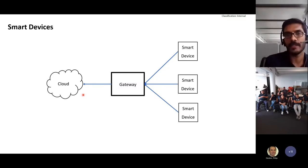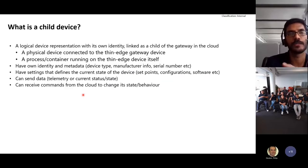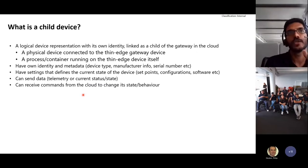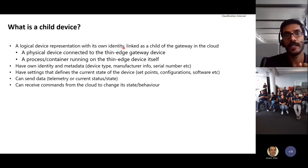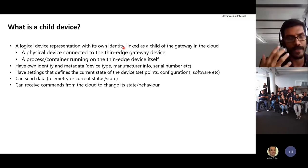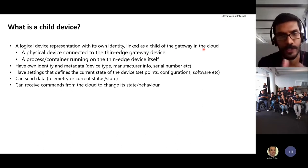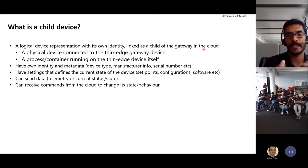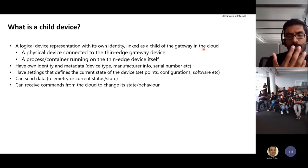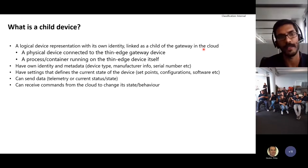To solve these use cases, we are introducing the concept of child devices in thin edge. A child device is a logical representation of a device in the cloud that has its own identity — it's different from the thin edge gateway device itself, but it is still linked to the gateway as a child or leaf node, depending on which cloud you're connected to. It needs its own identity but should still be linked to the gateway to better represent the field deployment hierarchy.